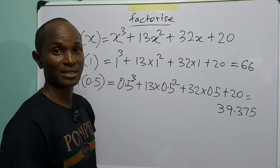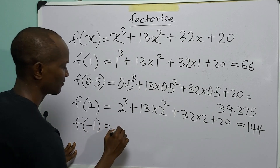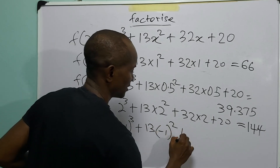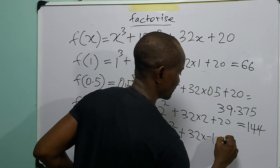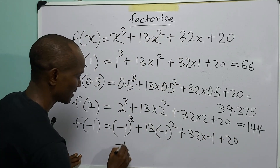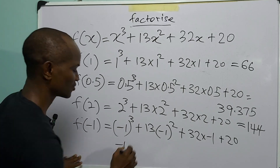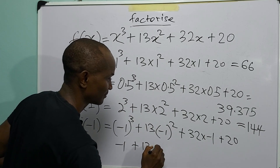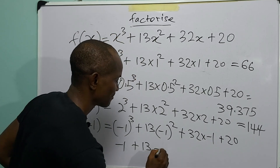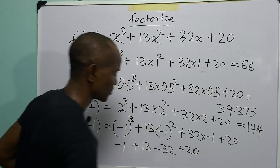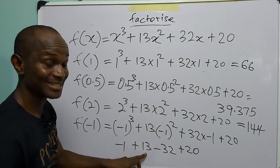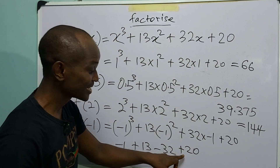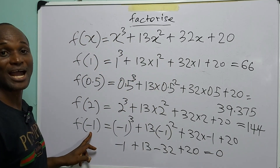Let us try minus 1. So we have: (−1)³ plus 13 multiplied by (−1)² plus 32 multiplied by (−1) plus 20. That gives us minus 1 plus 13, minus 32, plus 20. Minus 1 plus 13 is 12; 12 minus 32 is minus 20; minus 20 plus 20 is equal to 0.